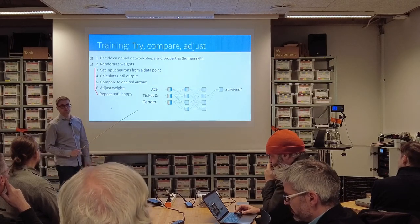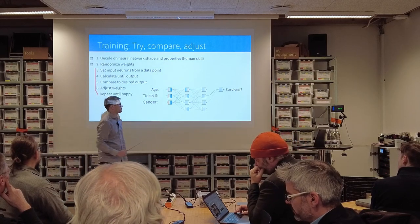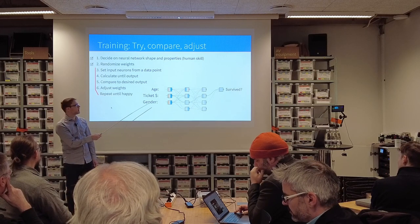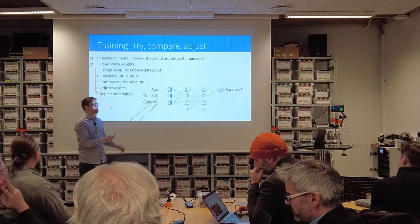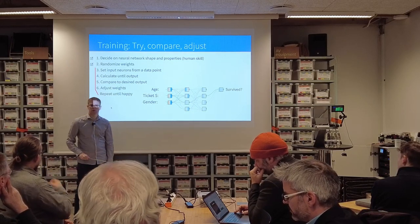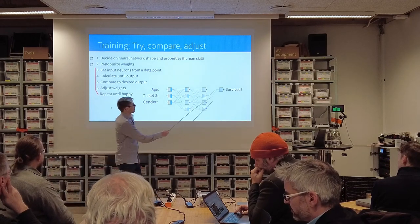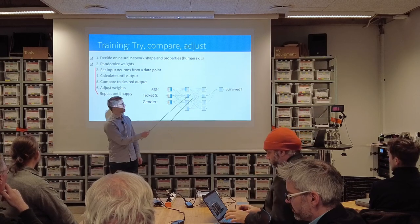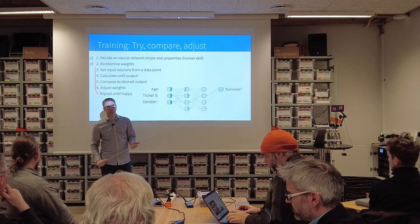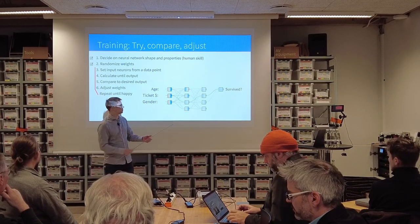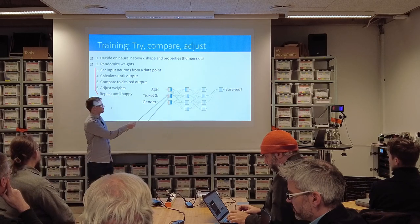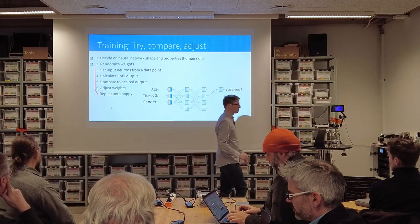When we do this with a neural network, it looks a bit different. First we have to decide on a neural network shape and properties. The shape on the left will have three input neurons for each of our three data points, so the activation of these neurons depends on the age, ticket price, and gender of the person we're looking at. Then we need one output neuron, because there's one single number that comes out: did this person survive or not? In between, we put some neural network — selecting how big that should be involves skill, experience, and a lot of experimenting. That's a human skill. I chose two by four neurons for this. The next thing we do is randomize the weights — all these weights are totally random, so it will just give random results at the beginning.